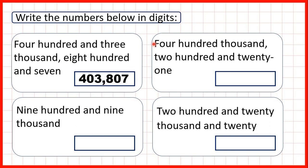Now we have 400,221. Again we read the number but stop at the word thousand. We have 400,000, so we write 400 and then a comma.